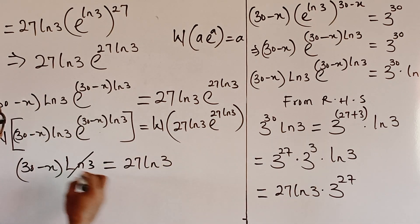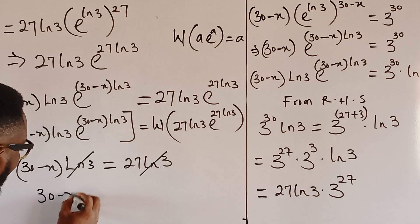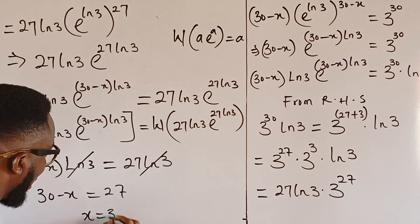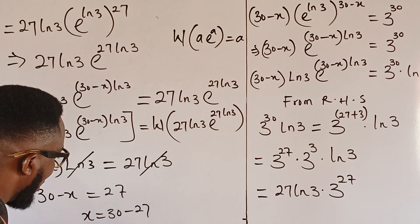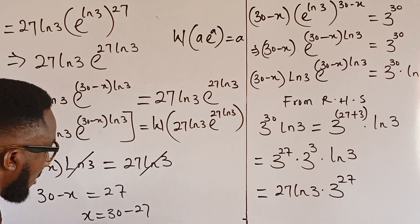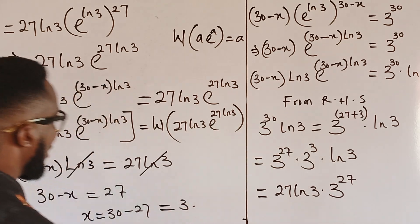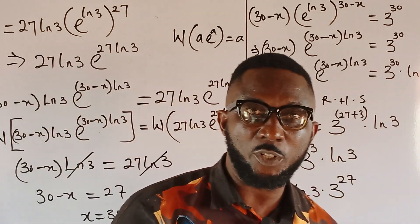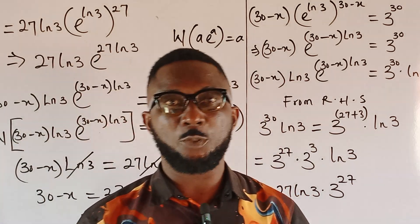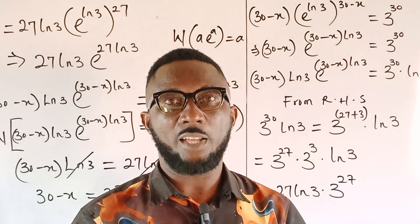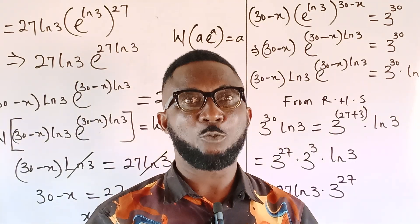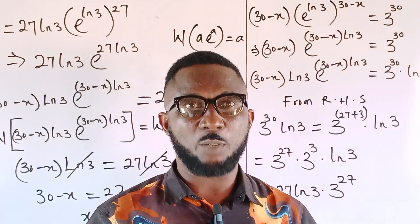So x equals 30 minus 27, which gives x equal to 3. This is the solution to the problem. Thanks for watching — please give this video a thumbs up, share it with your learning friends and colleagues, subscribe, and turn on post notifications so you won't miss upcoming videos. See you next time and stay blessed.